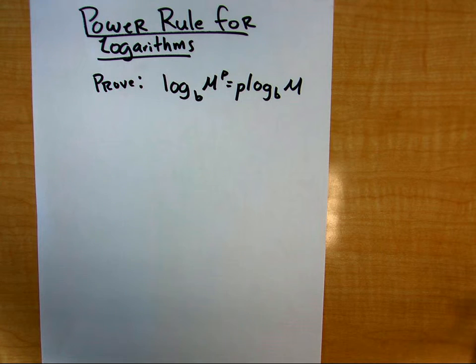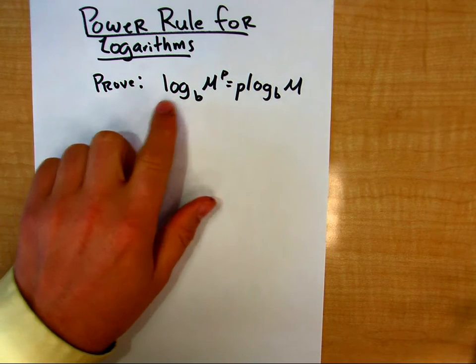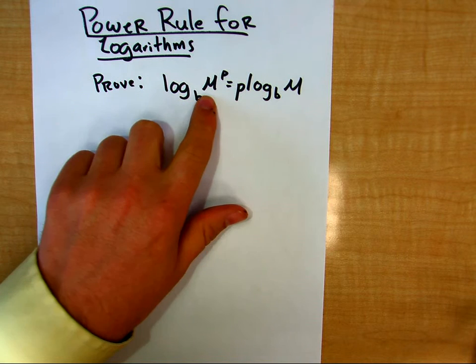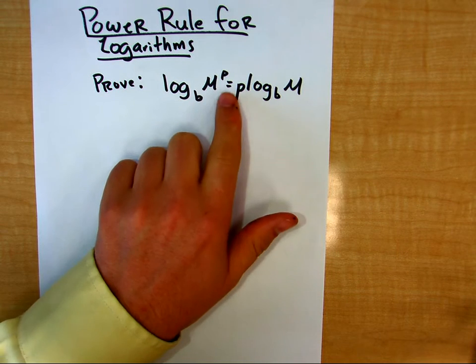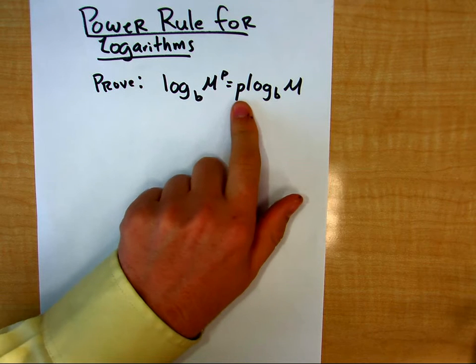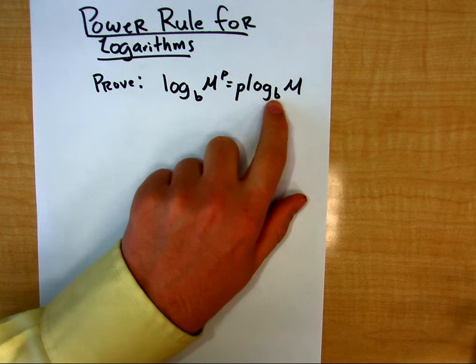Today I'd like to go over the power rule for logarithms. So I'd like to prove that log base b of m raised to the p power can also be rewritten as p times log base b of m.